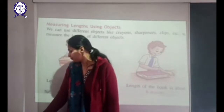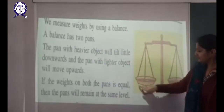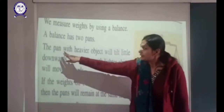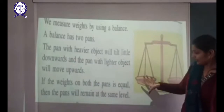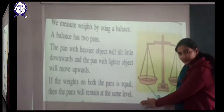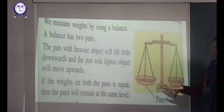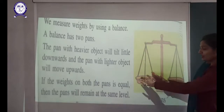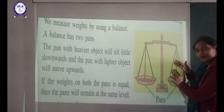We measure weight using a balance. This is a weighing balance — it has two pans. The pan with the heavier object will tilt downwards. If we keep a heavy object in one pan and a light object in the other, the pan with the heavy object goes down and the pan with the light object goes up.